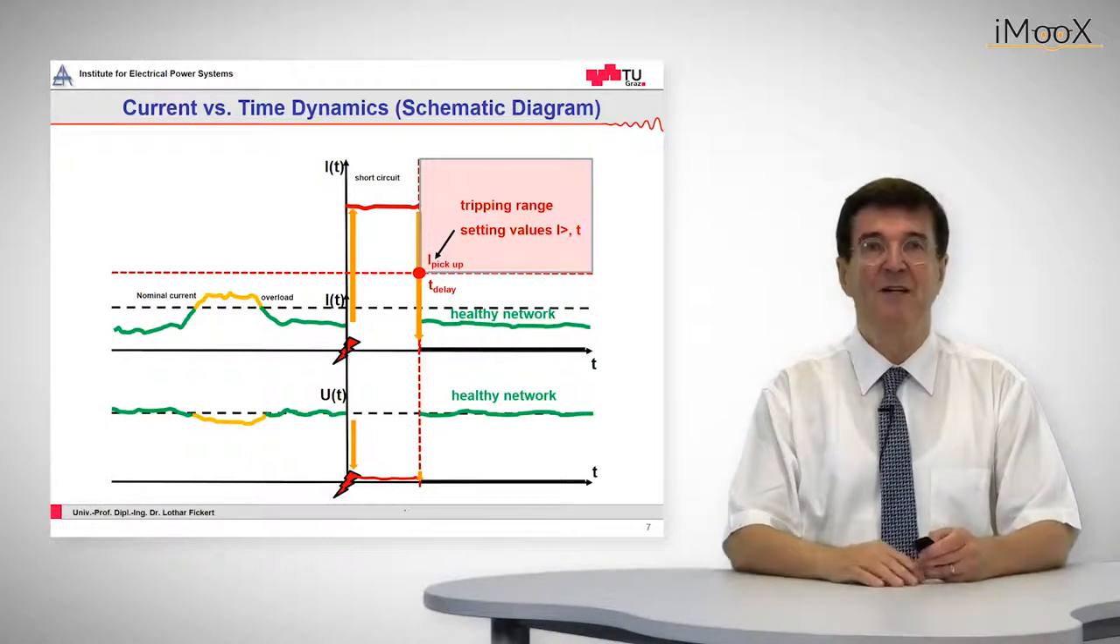So how are the current versus time dynamics? As given in the basics about overcurrent time protection, we can see that we start again from the normal situation, normal operation situation of the network which is given by nominal currents or below, nominal voltages, maybe a slight excursion into the overload range and then a recovery.